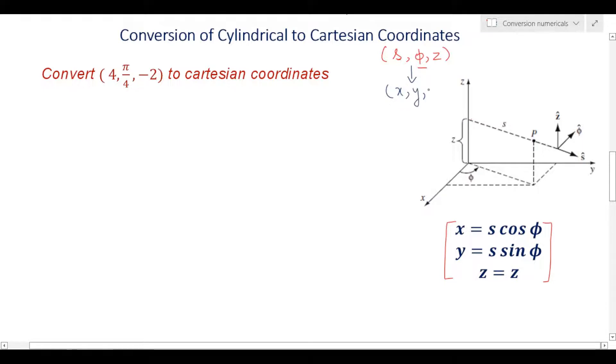Here your s is 4, phi is π/4, and z is -2. These numericals are very easy. You just need to remember the transformation equations and the trigonometric ratios. This is our first transformation equation, this is our second transformation equation, and z remains the same.